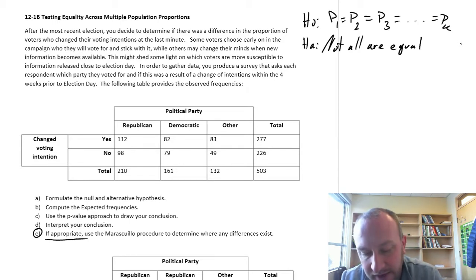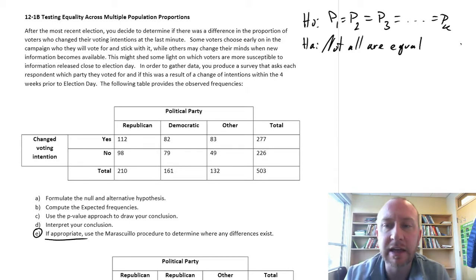This might shed light on why some voters are more susceptible to information released close to election day. So in order to gather data, we produce a survey that asks respondents which party they voted for, and if it was a result of change of intentions within the four weeks prior to election day. So here's our data. We have Republican, Democrats, and others.